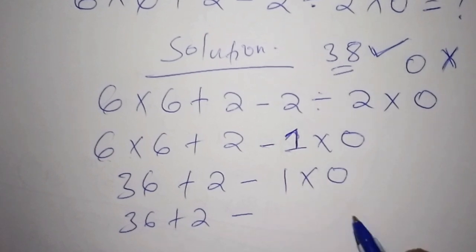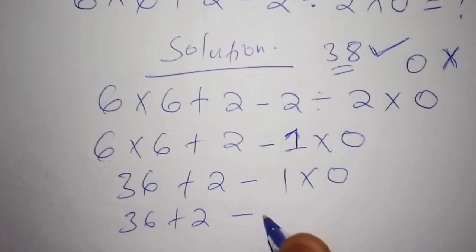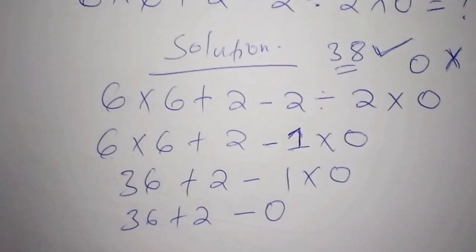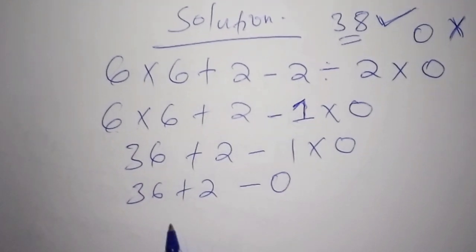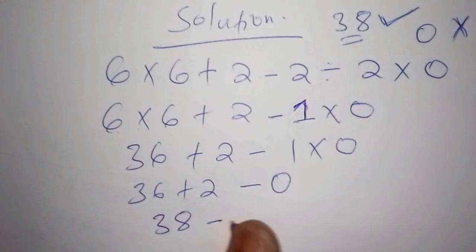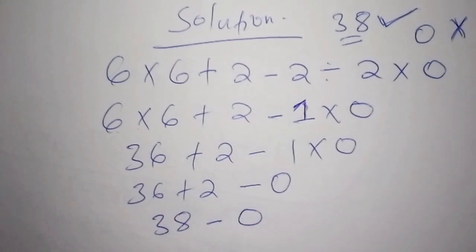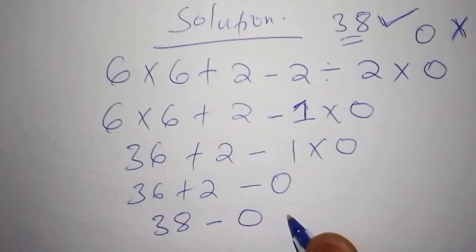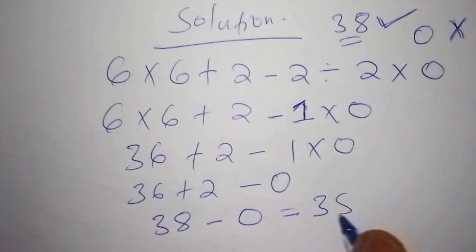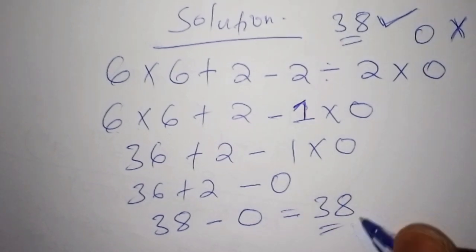One times zero is zero. So in our next step, we work out six plus two, which gives us 38, then minus zero. And 38 minus zero equals 38. That is the correct answer.